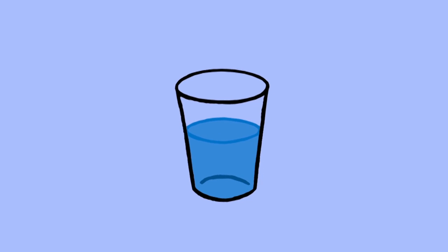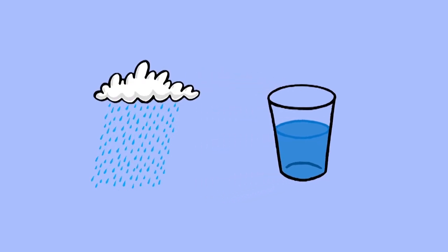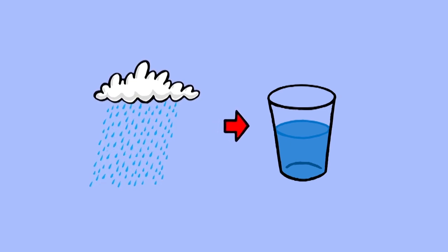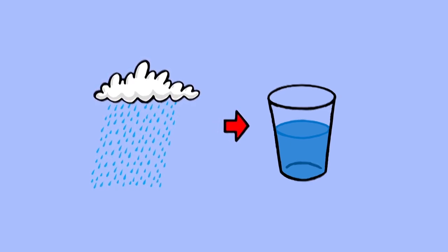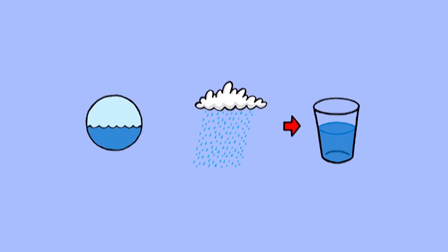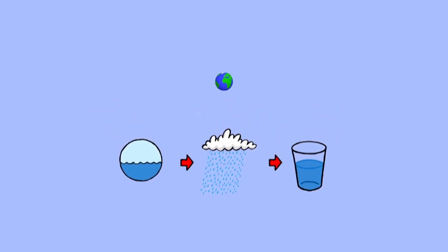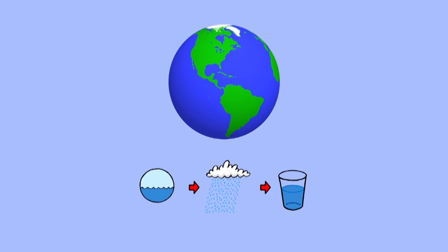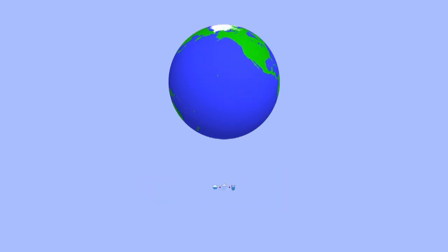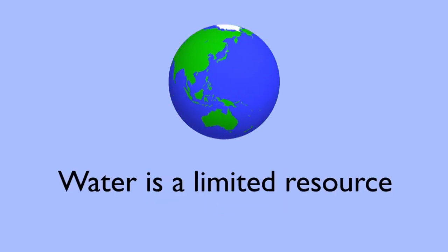When you drink a glass of water, what you may not realize is that the water you're drinking once fell from the sky, possibly any time from a few days to a few years ago, and that the water that fell from the sky was once part of the ocean. In fact, the water that you've just used to quench your thirst may be as old as the Earth itself. You might not have realized it, but the amount of water on Earth is limited.